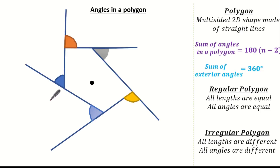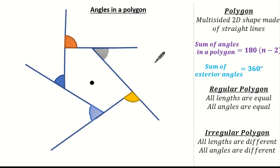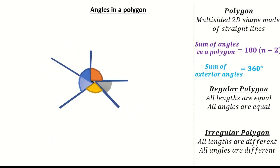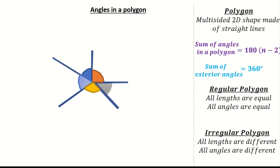Even if I look at an irregular polygon — here you can see I've extended each of our lengths and highlighted each of our exterior angles. Bringing all the exterior angles into the center of the polygon, you can see the sum of the exterior angles is 360 degrees. Therefore the sum of exterior angles is always 360 degrees.